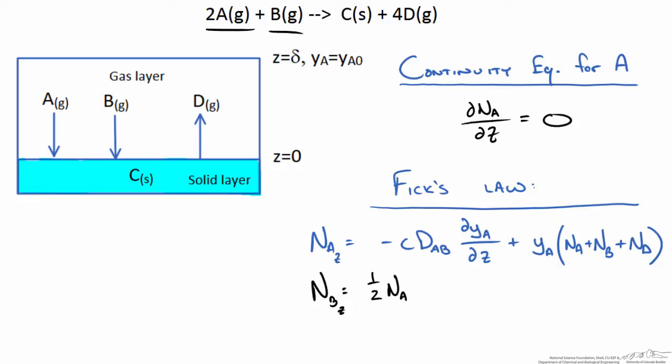When we compare A and D we see that for every 2A fluxing to the surface we have 4D fluxing away. Thus the flux of D with respect to A will be twice that of A and in the opposite direction. So 2NA is equal to negative ND. We are going to write the flux of ND in the direction as negative 2NA.